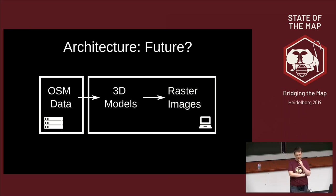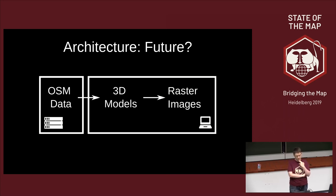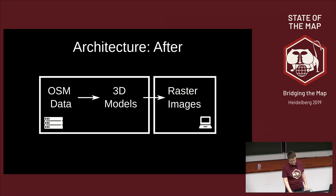This raises the question: why not do everything on the client? We could just send OpenStreetMap data to the client and do the other steps in the browser. There are two reasons for not doing this yet. One is that performance isn't quite there yet — creating the 3D model takes a lot of time, which doesn't make for an interactive experience. The other is that OSM2World is using a software stack not particularly suited for this setup, so client-side processing is something I want to eventually do, but this is the intermediate goal for now.